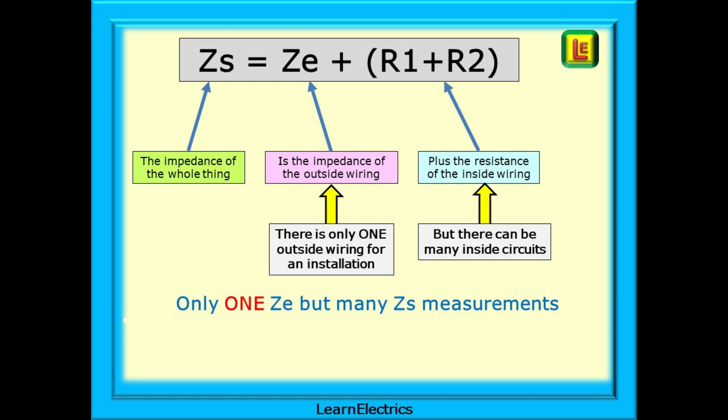You will be familiar with this formula but let's have a recap. Zs is equal to Ze plus R1 plus R2. Zs is the impedance or resistance of the whole socket circuit. It is a measurement from the point of use out of the property to the supply transformer and back. We call this the earth fault loop impedance.